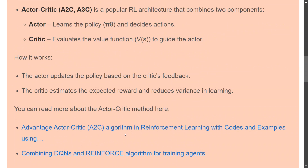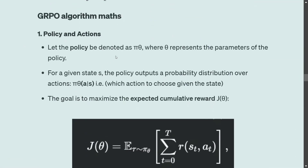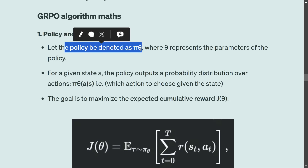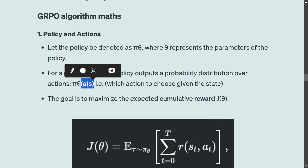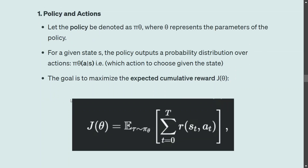Now let's jump into the mathematics of the GRPO algorithm. First, assume that the policy is defined by π_θ — specifically π_θ(a|s) — where 'a' stands for action and 's' stands for state. So for a given state and a given action, what is the policy? It tells us: given a state, what action should be taken.